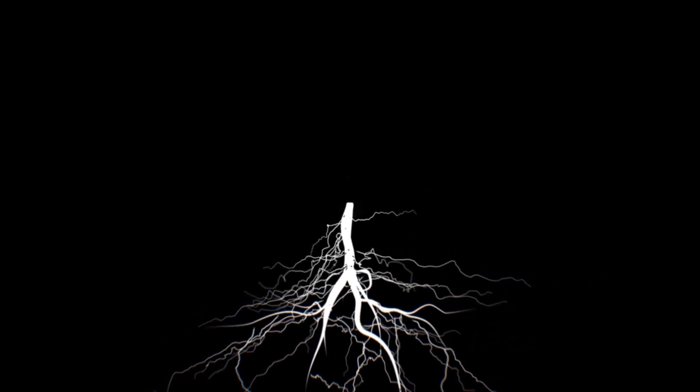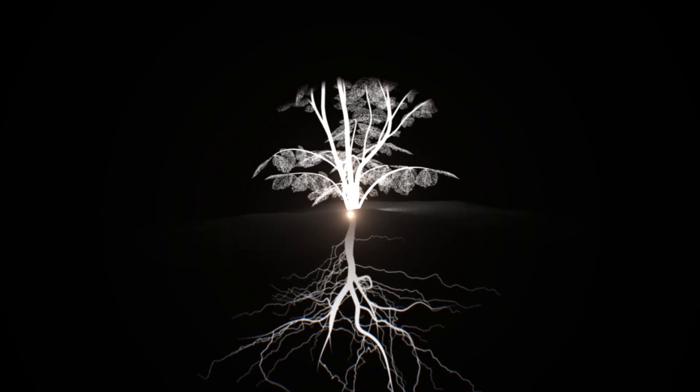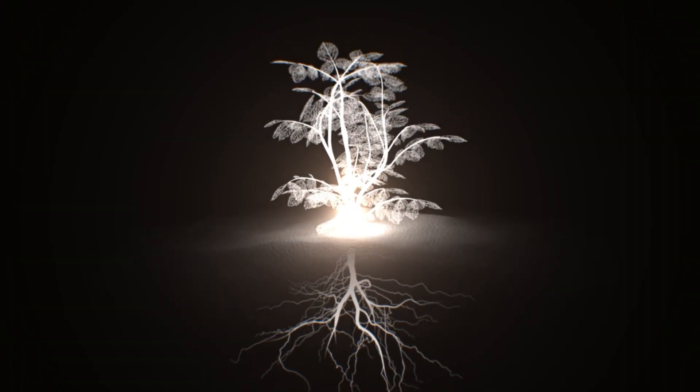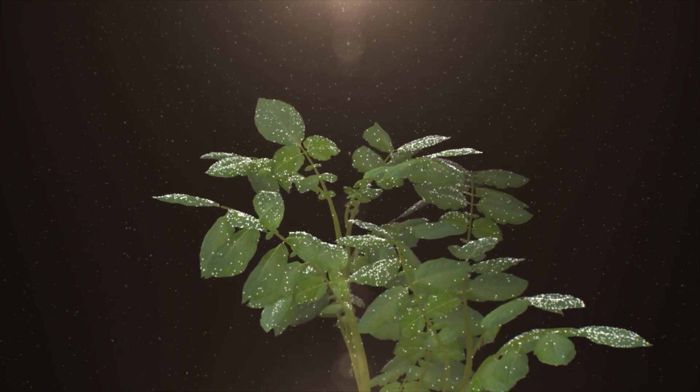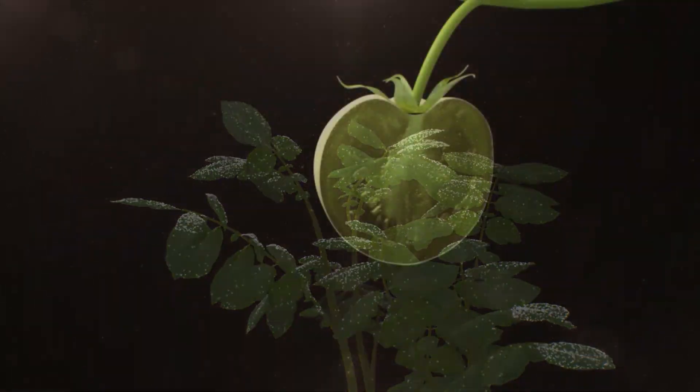The only efficient way to move calcium into the developing fruit or tubers is through root uptake and movement through the xylem. Foliar calcium applications, because of their very limited movement within the plant, do very little to promote healthy fruit development.